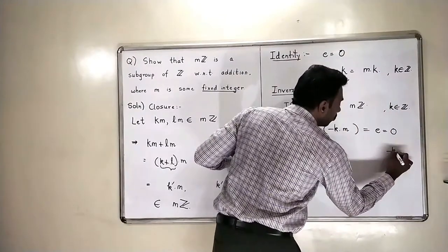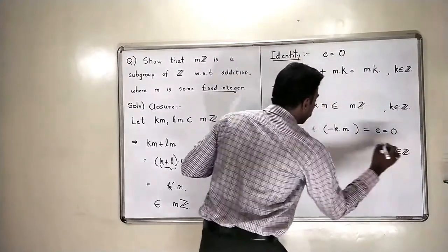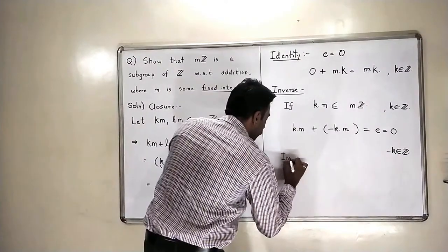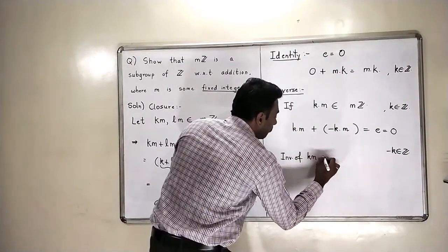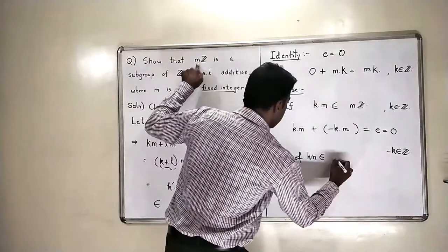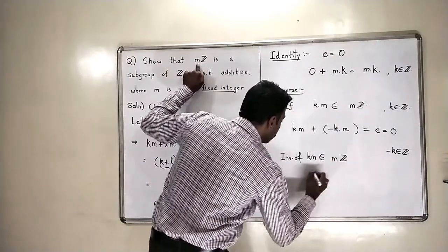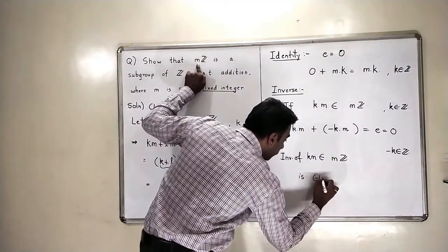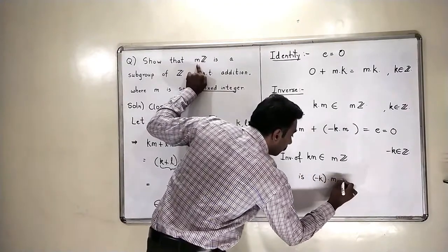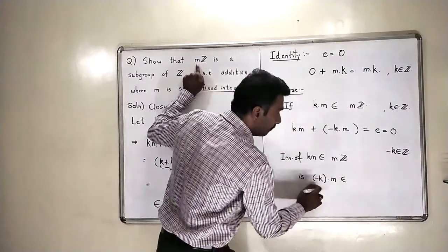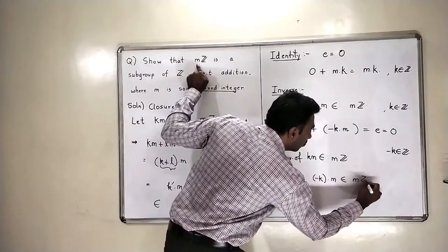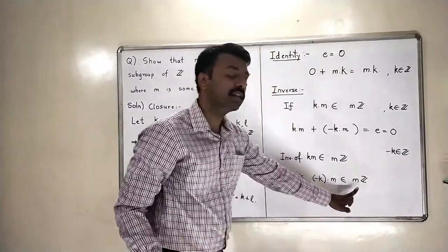Therefore, minus k is also an integer. So, who is the inverse of km? The inverse of km which is in mZ is minus k times m which is also some multiple of m. So, it is belonging to mZ. So, inverse is also in the same set.